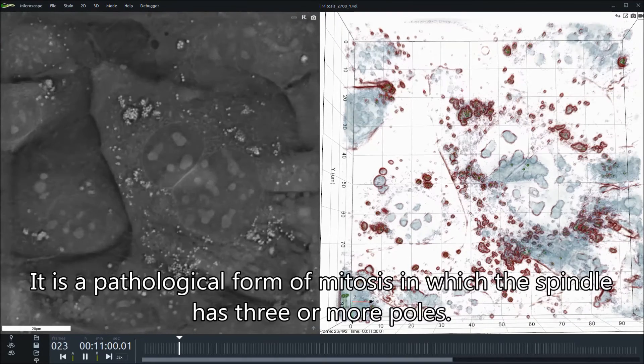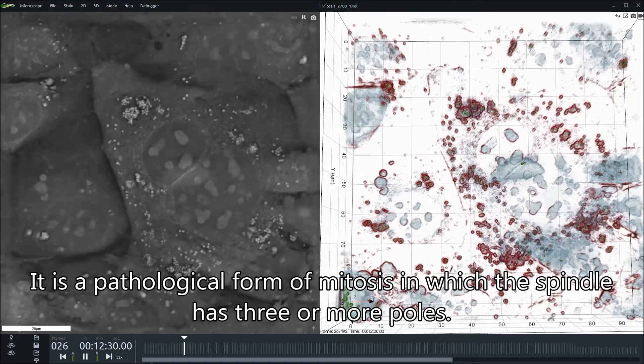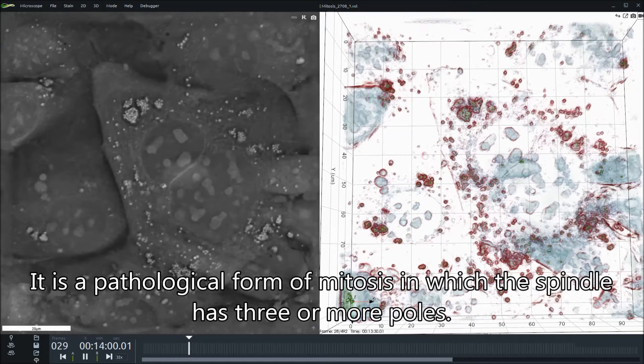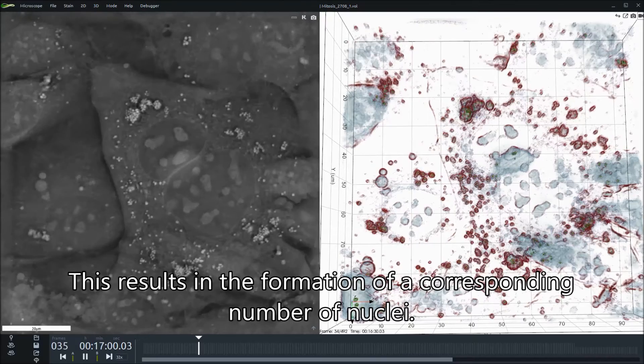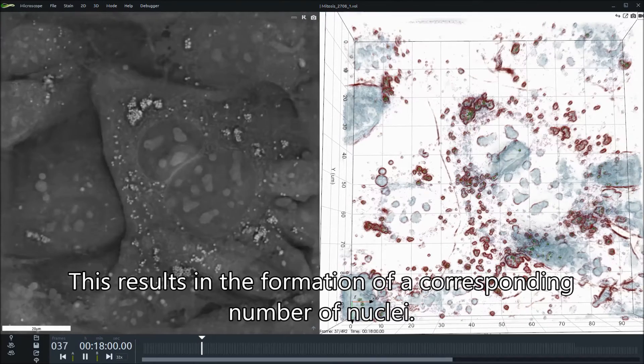It is a pathological form of mitosis in which the spindle has 3 or more poles. This results in the formation of a corresponding number of nuclei.